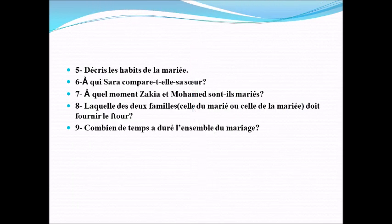Question 5 : décrivez les habits de la mariée, c'est-à-dire dites comment sont les habits de Zakiya. Question 6 : à qui Sarah compare-t-elle sa sœur? Ça veut dire « comment elle la trouve? Elle ressemble à quelqu'un peut-être? » Question 7 : à quel moment Zakiya et Mohamed sont-ils mariés? Ça veut dire « quand est-ce qu'on peut dire que Zakiya et Mohamed sont mariés? »